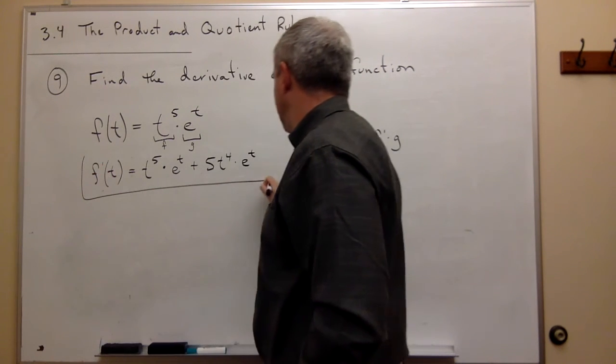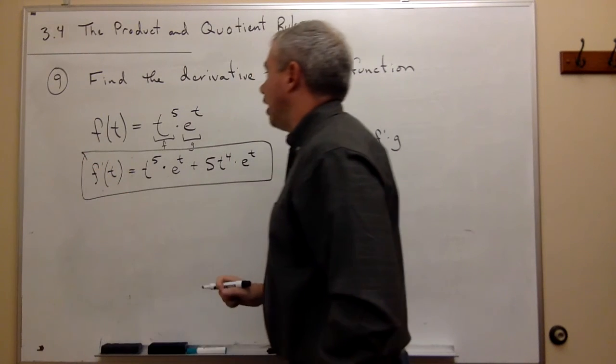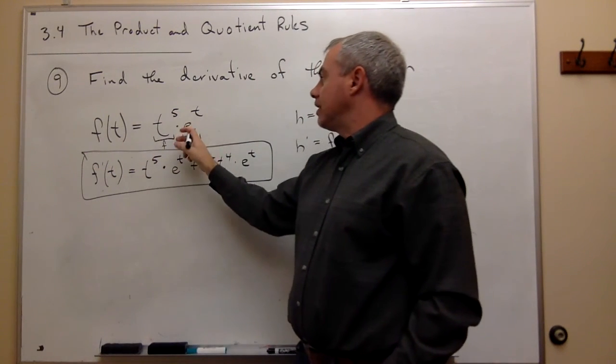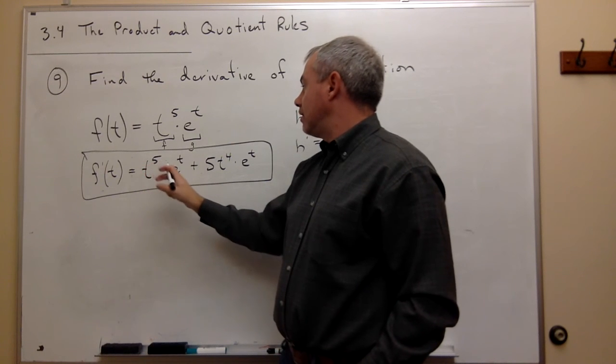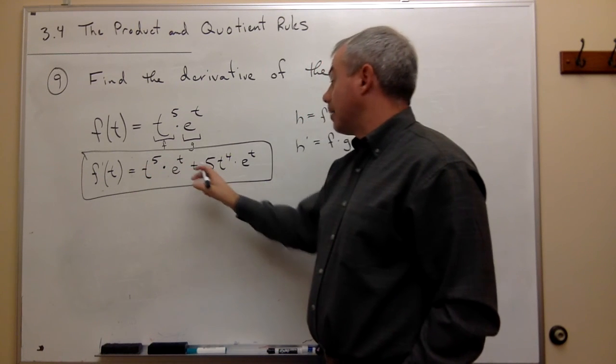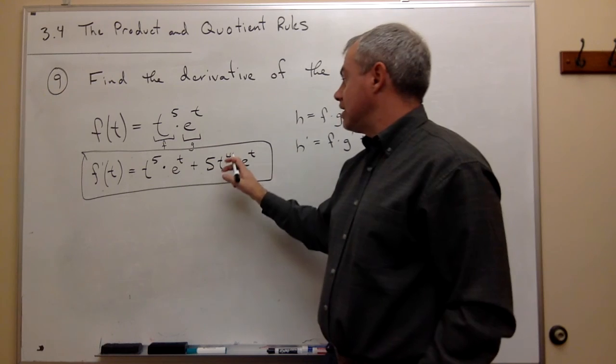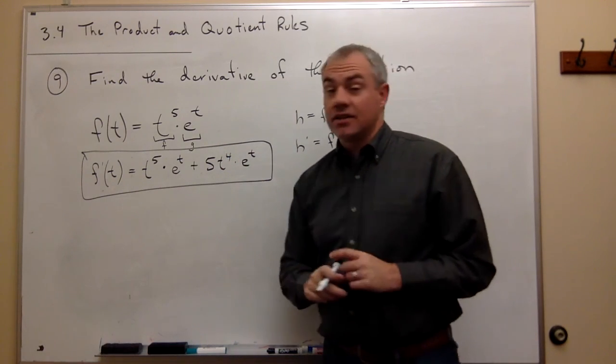So the derivative of t to the fifth e to the t is t to the fifth e to the t, plus 5t to the fourth times e to the t.